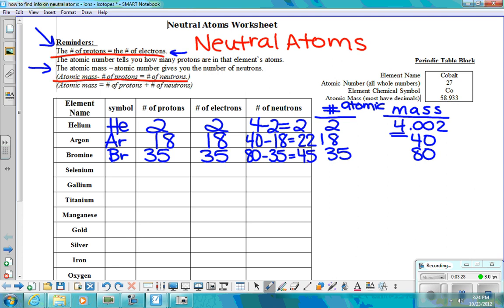Let's do one more together. Selenium. The number of protons is found by looking at the atomic number. In this case, the atomic number is 34. My atomic mass, in this case, is 79, rounded to the nearest whole number. The number of protons is found by looking at my atomic number, which is 34. The number of protons equals the number of electrons. I take my atomic mass, subtract my number of protons, or my atomic number. In this case, we have 39 neutrons.